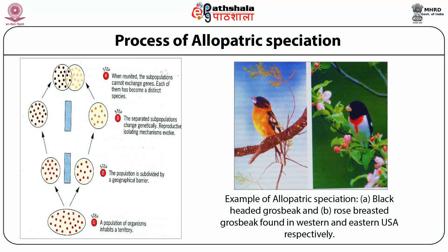The mechanism of allopatric speciation involves the following steps: first, a population of organisms inhabiting a particular territory; second, a geographical barrier arises between the two subpopulations, which become subdivided and inhabit different zones with no longer any contact; third, the separated subpopulations change genetically, usually because of the role of drift over these populations. The drift has an enormous effect because the size of the populations has been reduced due to their subdivision. When these populations reunite, the subpopulations cannot exchange genes because they have become so genetically distinctive from each other.